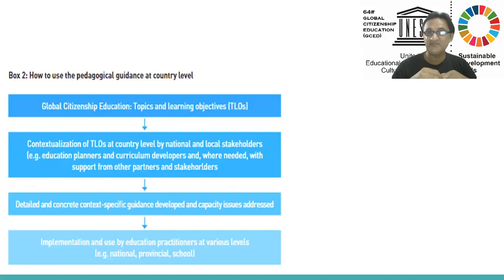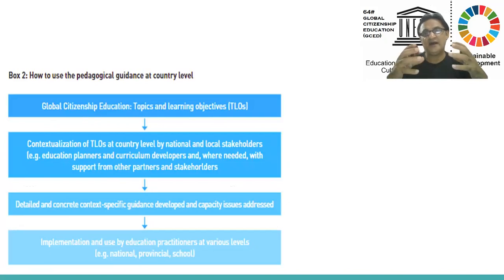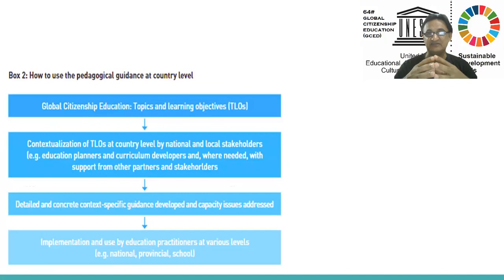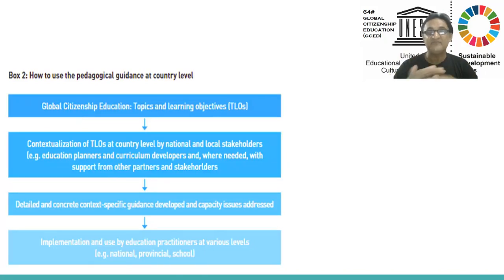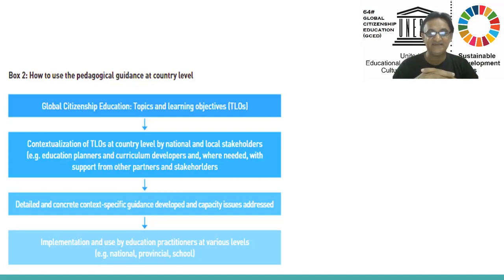How to use pedagogical guidance at country level: global citizenship topics and learning objectives — TLOs — and their contextualization at country level by national and local stakeholders. Global Citizenship Education or UNESCO sets its curricula based on the need of the country — what is the language, the standards, the community, the need of the students. Based on that, they set these topics and learning outcomes. Detailed and concrete context-specific guidance is developed to address capacity issues, for implementation at national, provincial, and school levels.